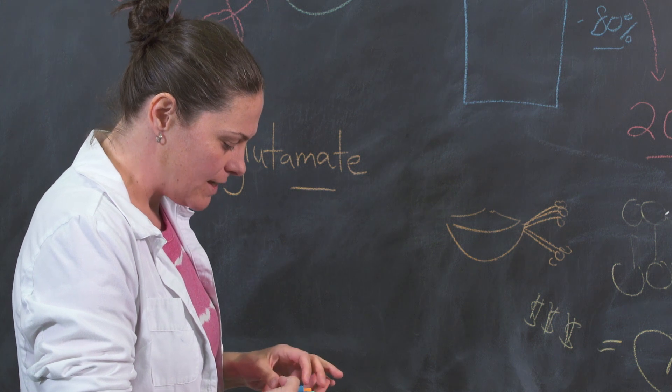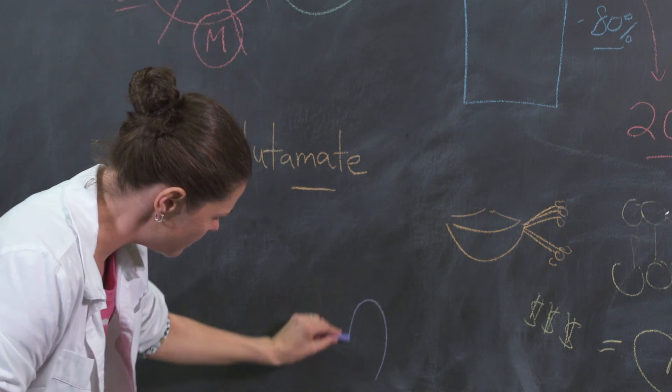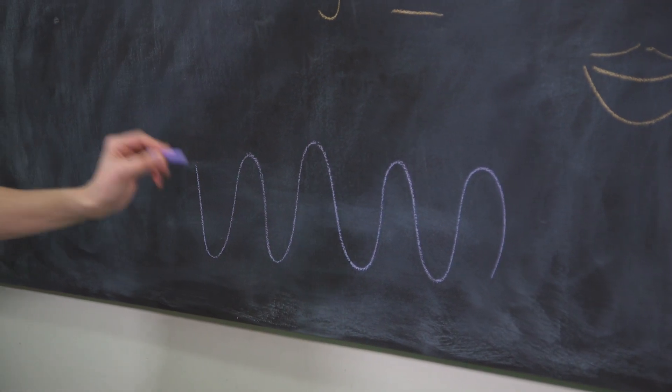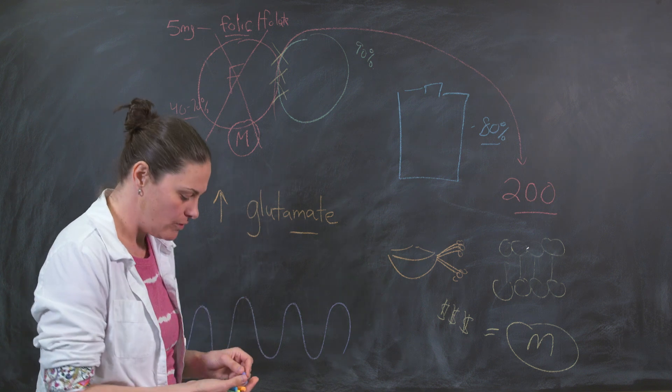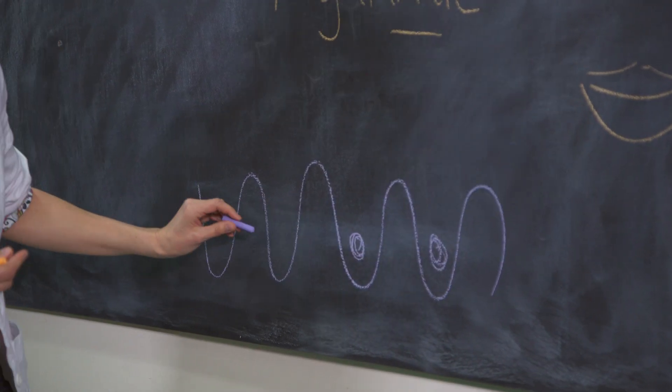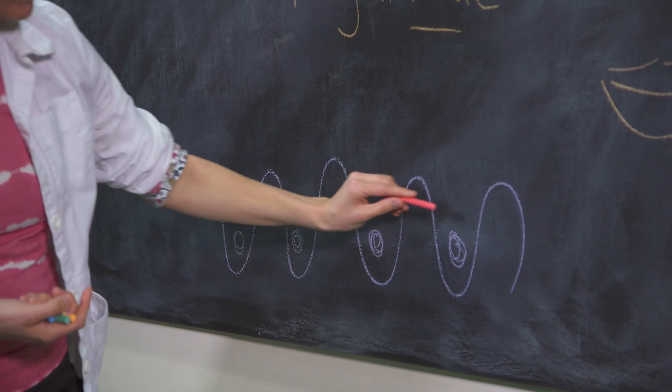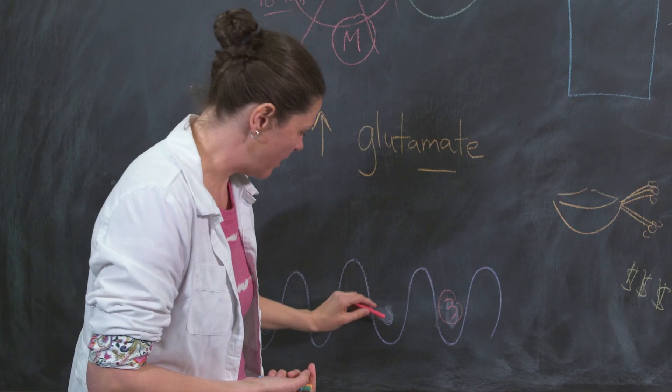When your folic acid isn't converting, it basically clogs the brain. Let's imagine that these are the folate receptors. The folate receptors preferentially bind synthetic folic acid, which means that this is totally clogged with crappy folate until we replace it with our golden methylfolate. This will only happen if your child is 100% grain-free.